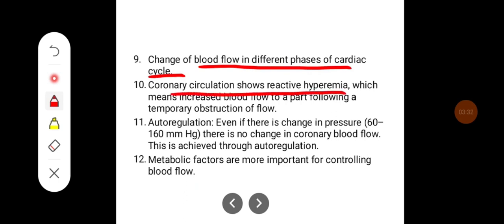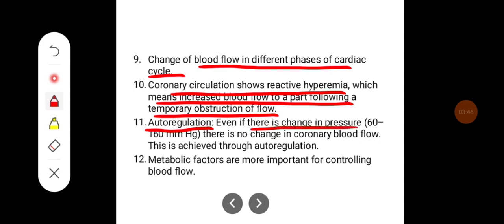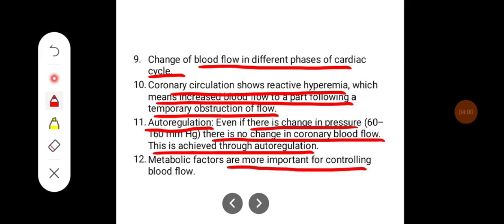Coronary circulation shows reactive hyperemia, which means increased blood flow to a part following a temporary obstruction of flow. There is also autoregulation: even if there is a change in pressure between 60 to 160 mmHg, there is no change in coronary blood flow. Metabolic factors are important for controlling blood flow.